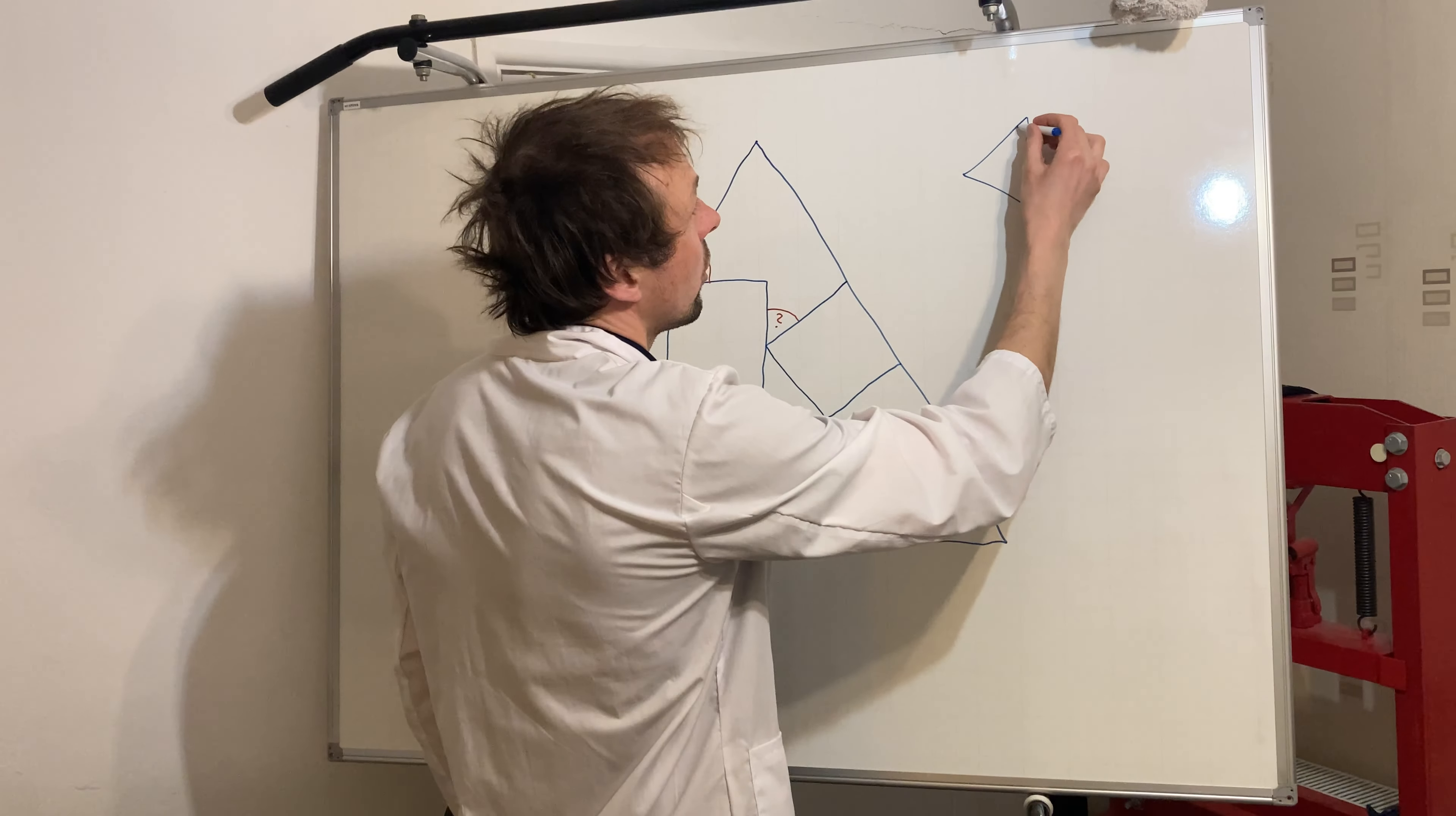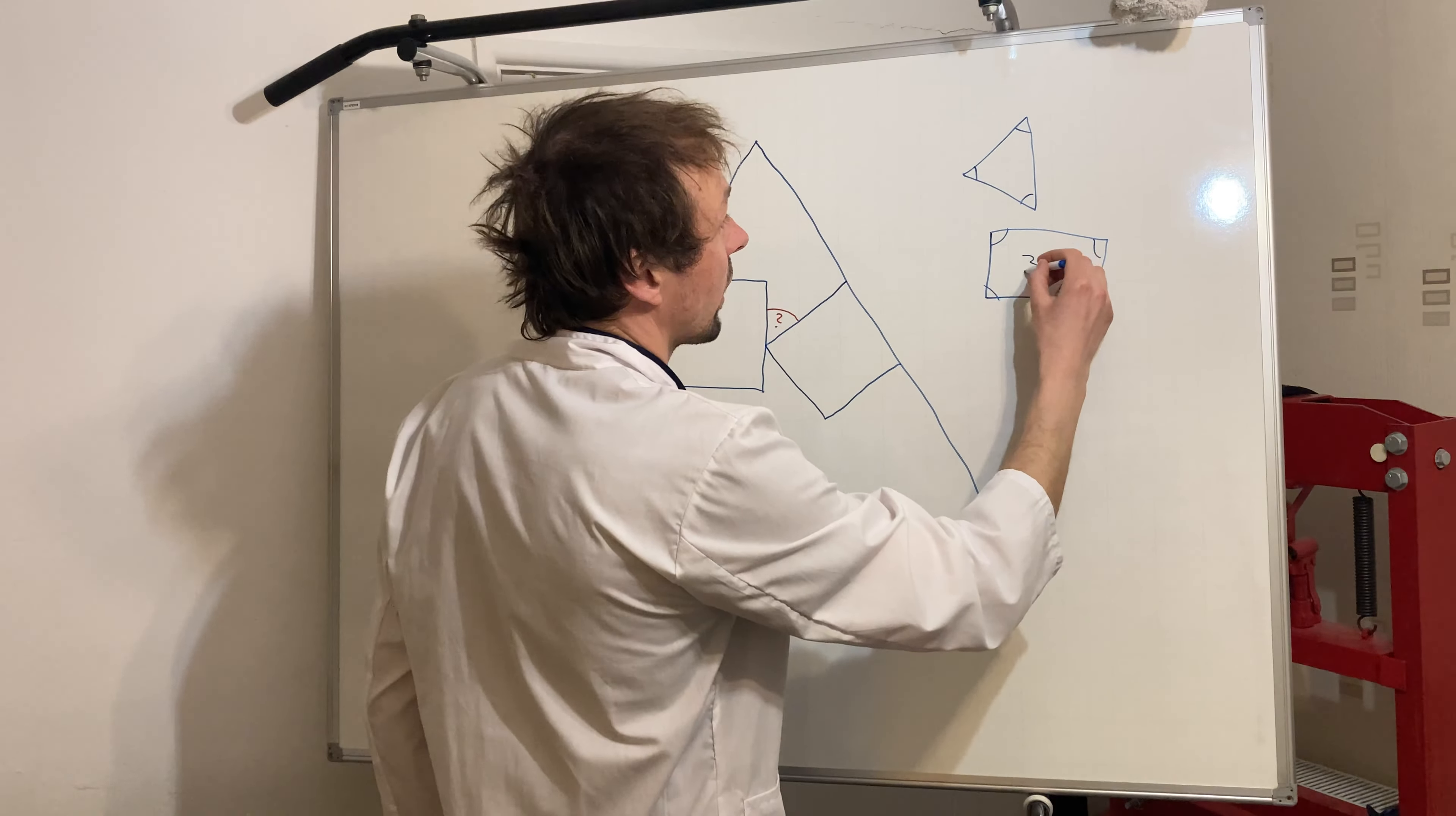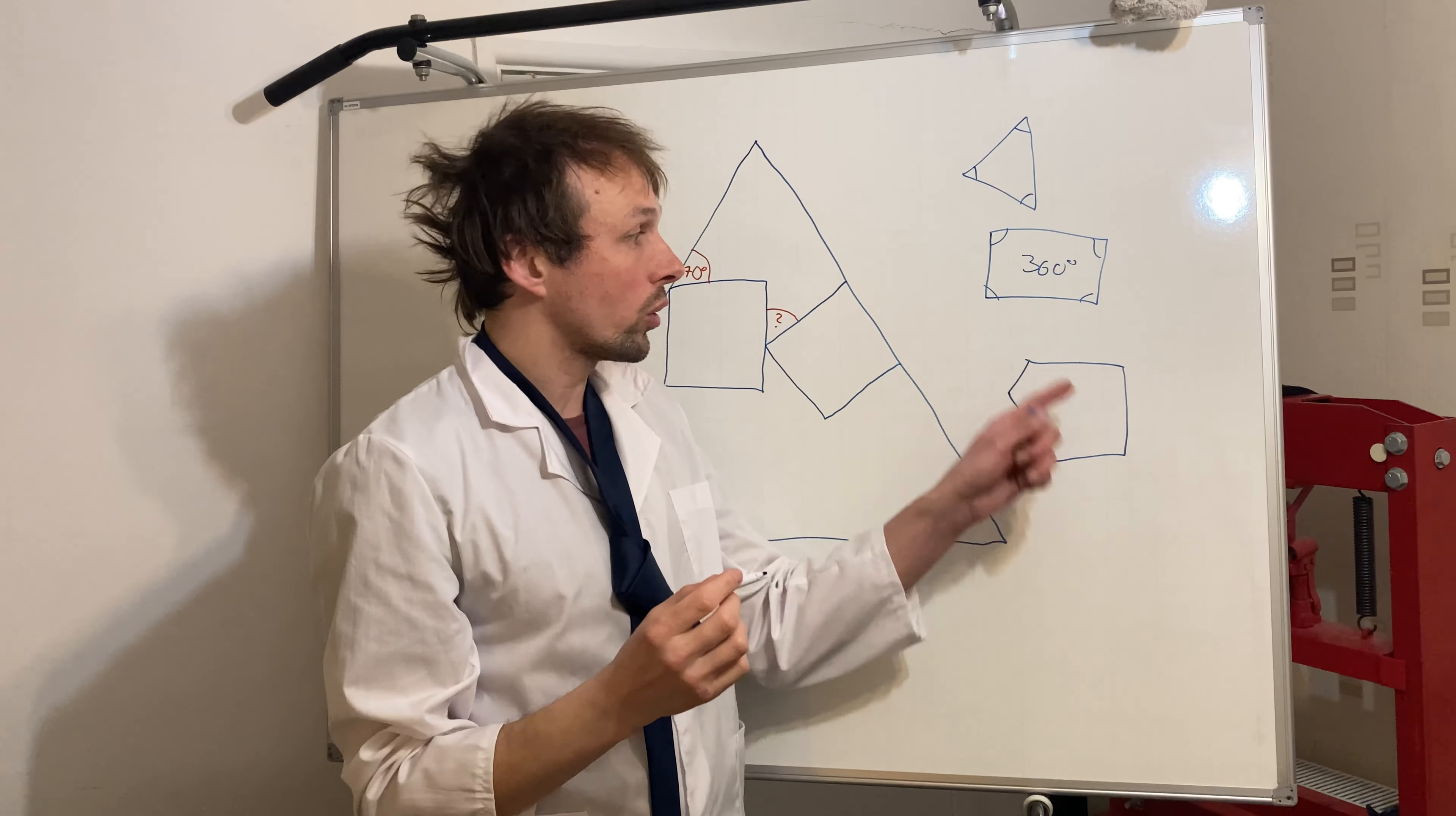So let's say if we have a triangle, always the sum of all the angles is going to be 180 degrees. If we have a rectangle, always the sum of all the angles is going to be 360 degrees. That's right, 360.